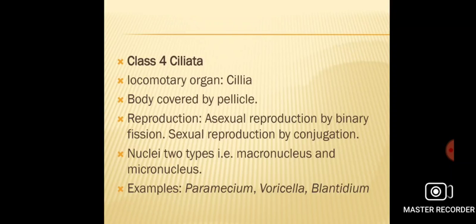In ciliates, there are two types of nuclei. A large kidney-shaped nucleus called the macronucleus, and a small spherical nucleus attached to the macronucleus called the micronucleus. Examples of ciliates are Paramecium, Vorticella, Balantidium, etc.